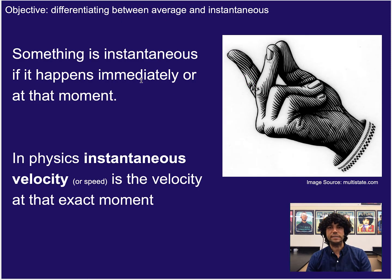Now let's talk about instantaneous versus average. So something that is instantaneous is something that happens immediately or at that exact moment. Oftentimes you'll see people snap like this when they talk about instantaneous. Like what is your speed right now or right now or right now or right now. So you think about if you're trying to look at something that's instantaneous, you're just looking at a brief measurement at a single moment or single instant in time.